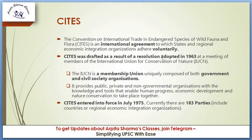CITES was drafted as a result of a resolution adopted in 1963 at a meeting of members of the IUCN — the International Union for Conservation of Nature. IUCN is a membership union uniquely composed of both government and civil society organizations. It provides public, private, and non-governmental organizations with the knowledge and tools that enable human progress, economic development, and nature conservation to take place together.